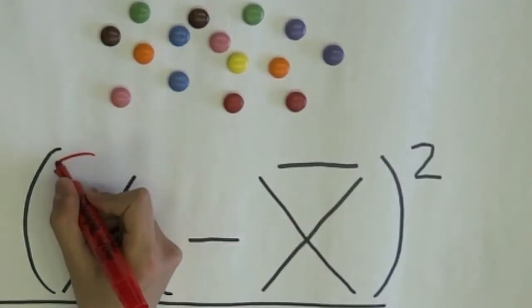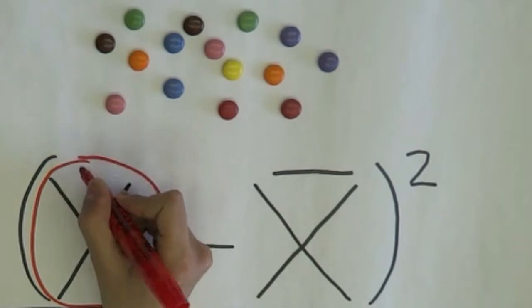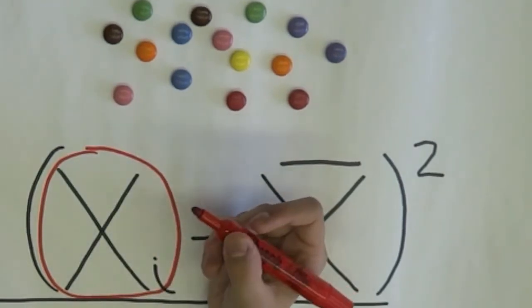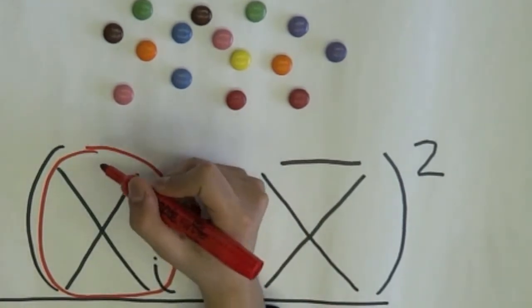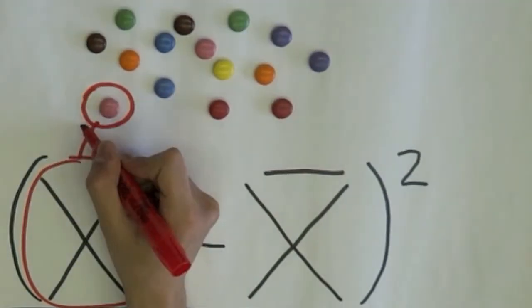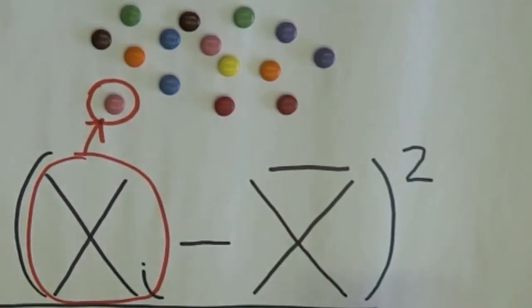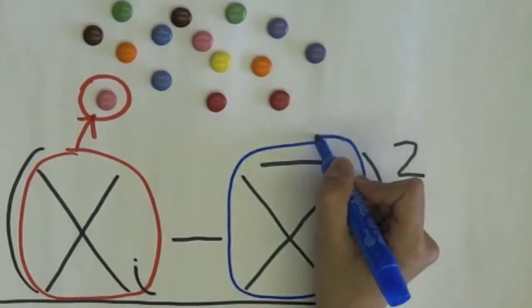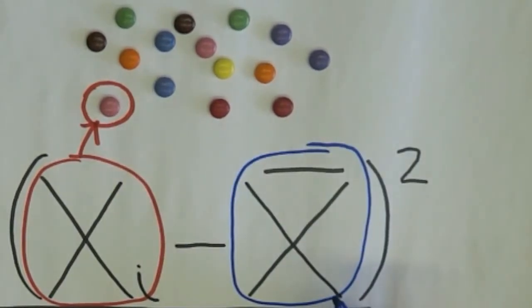xi represents each data point, which in our case is the weight of each individual's body. Whereas, x bar represents the sample mean.